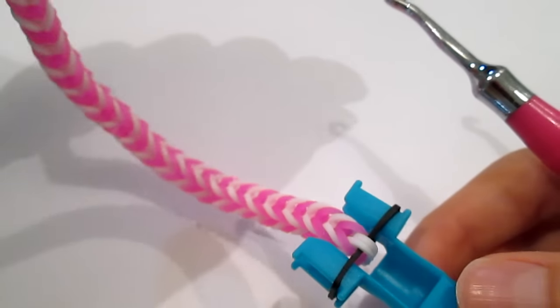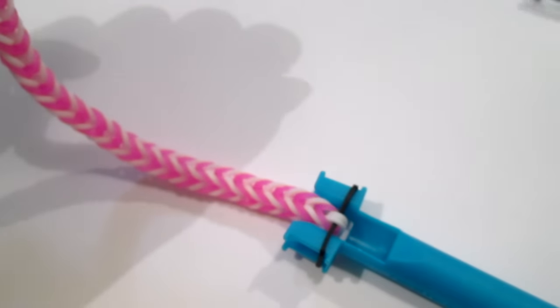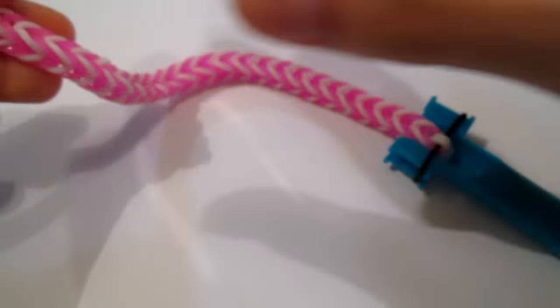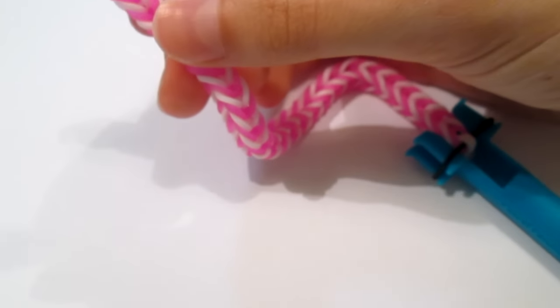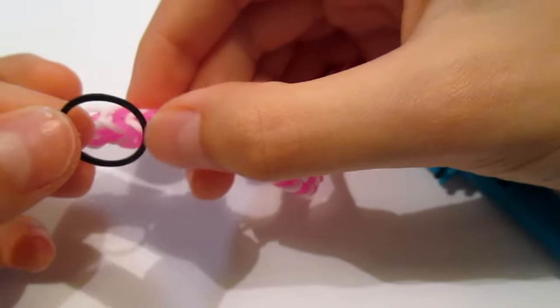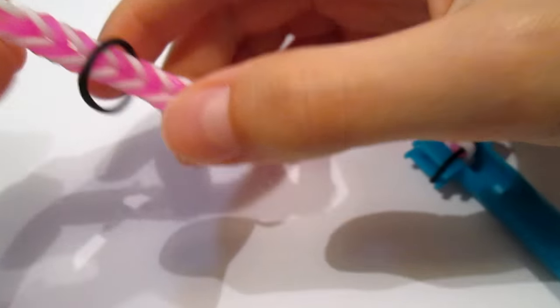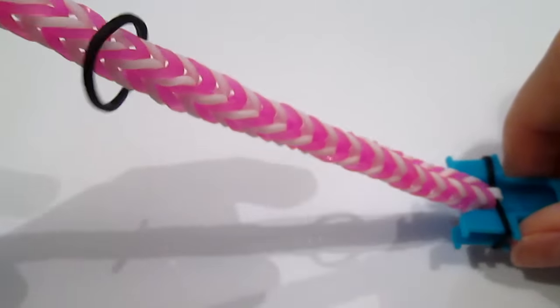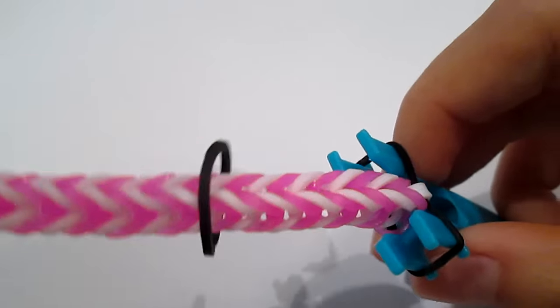And then, you basically do sort of like a normal single in a way, but it's rather different. Now, you take a black band, string it onto and down this fishtail that you have in the middle here.